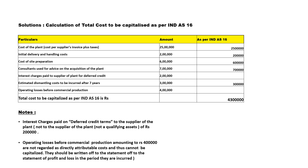Working note: operating losses before commercial production amounting to rupees 4 lakhs are not regarded as directly attributable costs and thus cannot be capitalized. They should be written off to the statement of profit and loss in the period they are incurred. Both excluded items — the interest charge and operating losses — are explained in the working notes.